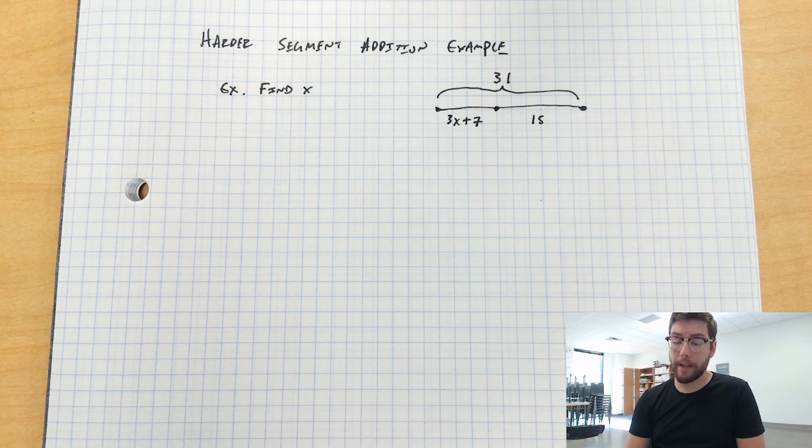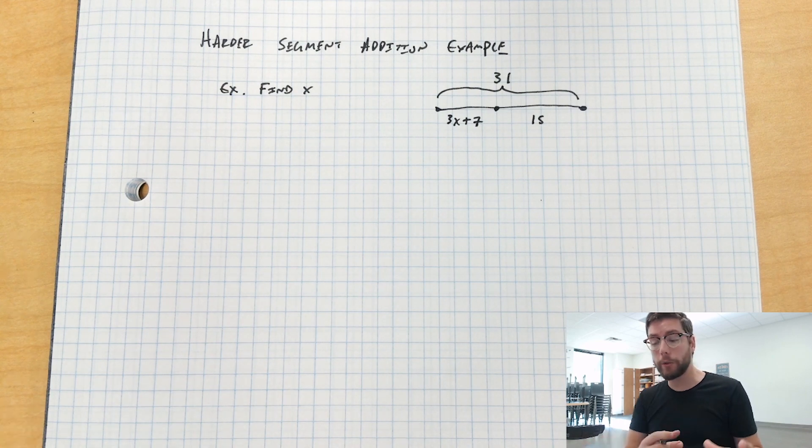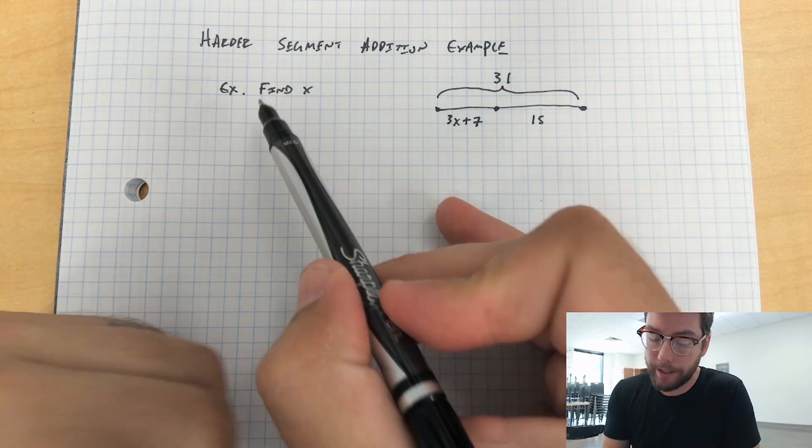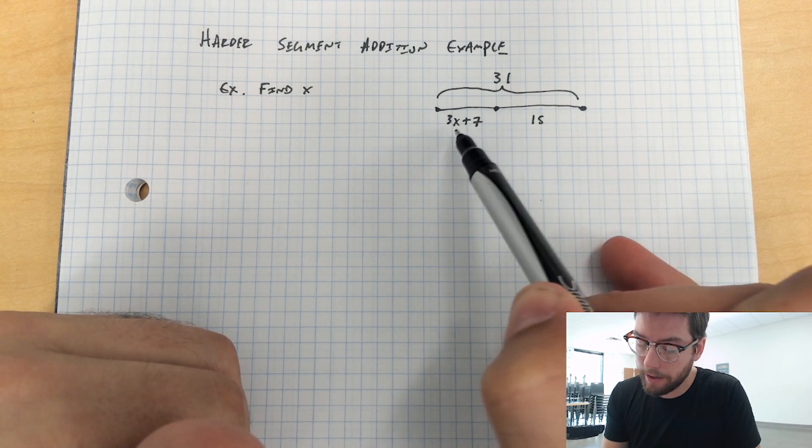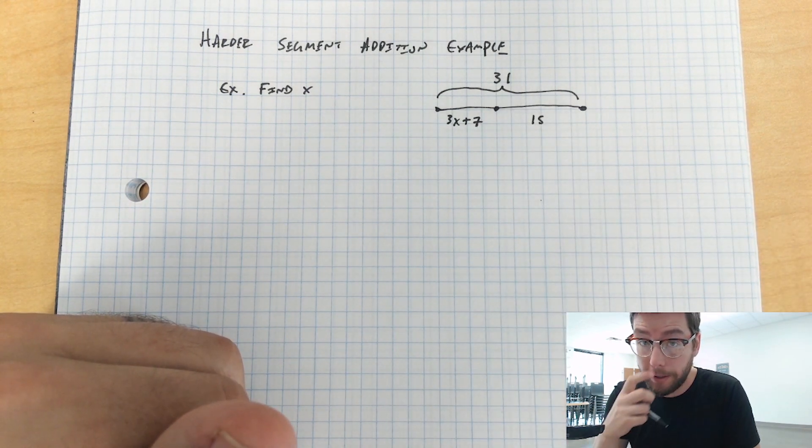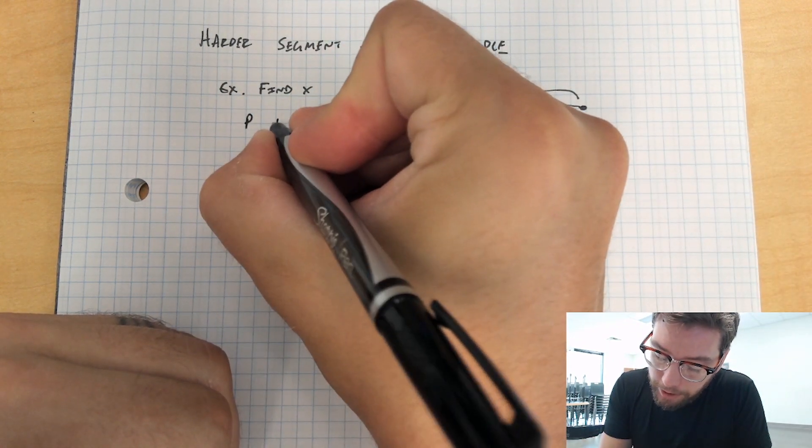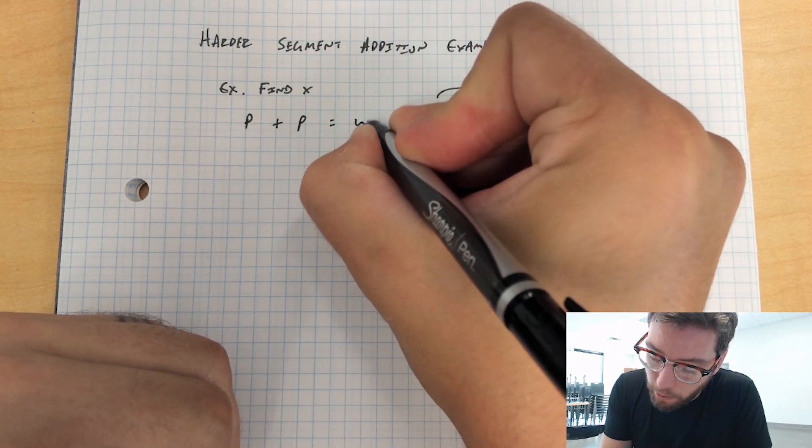All right, so here we have a harder segment addition example. This is going to include the algebra that we learned last year. We got one that says find x. We have x right here, and then 15, and then 31. So we're going to use our segment addition postulate, which is part plus part is equal to the whole thing.